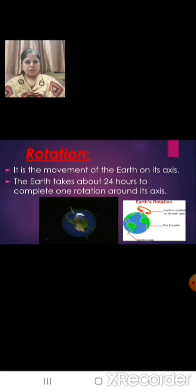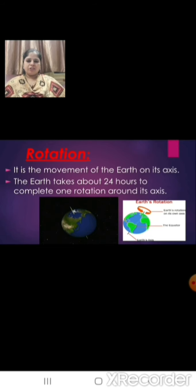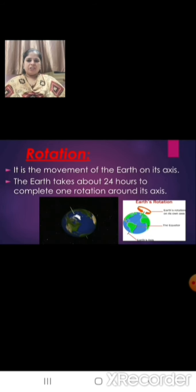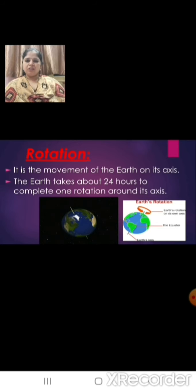What is rotation? Rotation is the movement of the earth on its axis. The earth takes about 24 hours to complete one rotation around its axis, and the earth rotates from west to east. The imaginary line around which the earth rotates is called its axis.